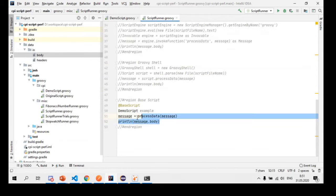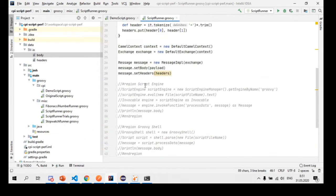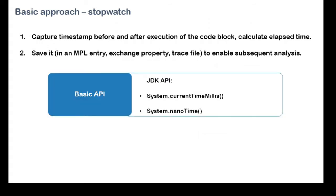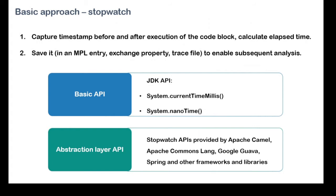Now let's look at measurement approaches. The most basic approach is the stopwatch: make two timestamps — one before the measured code block and one after — find the delta. This delta is a rough estimation of execution time. We have two approaches: built-in JDK APIs (which I'll call basic API) and abstraction layer APIs. Some libraries and frameworks provide abstractions over JDK APIs; the one we'll look at is provided by Apache Camel, since Camel is the integration framework heavily used by CPI.